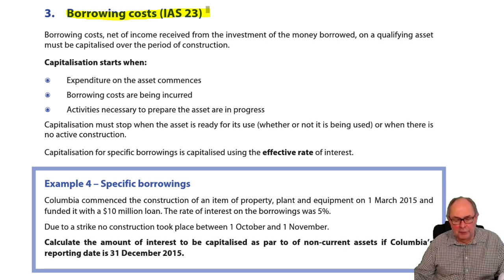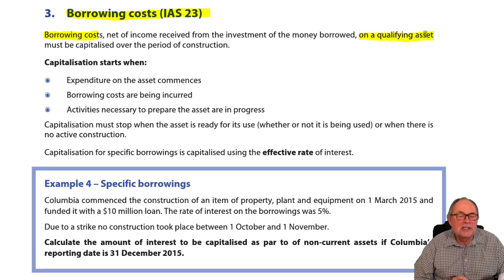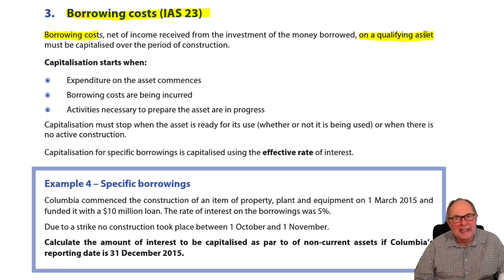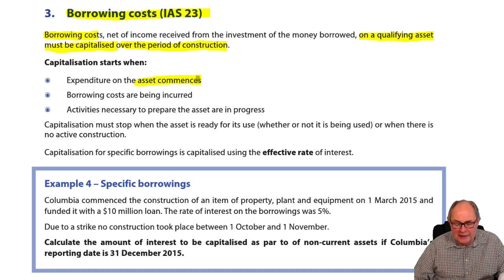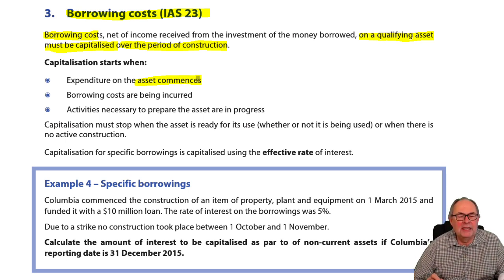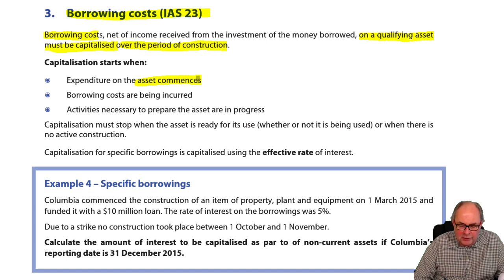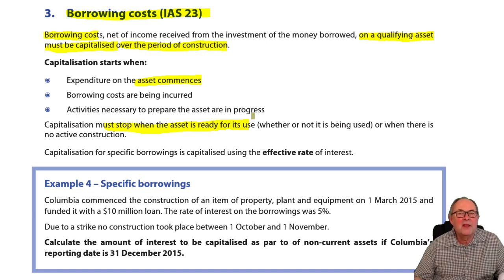The key rule is that borrowing costs on qualifying assets — those are assets that take a substantial period of time to get ready, so a year or something like that — must be capitalized over the period of construction. Construction starts when you actually start building, and it stops when you stop building. If there's a strike or something in the middle, that capitalization would be paused. It stops when the asset is ready for use — when the builders move out.